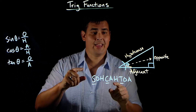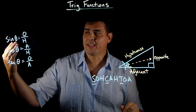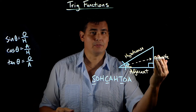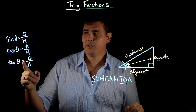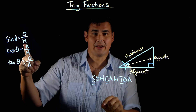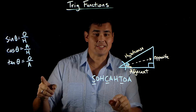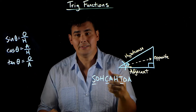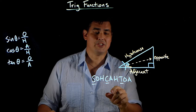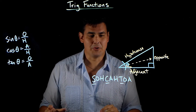Sine theta, cosine theta, tangent theta — these are just ratios; the ratio of the length of one side of the triangle to the other. So sine of theta equals the opposite side divided by the hypotenuse. Cosine theta equals the adjacent side divided by the hypotenuse. And tangent theta equals the opposite side divided by the adjacent side — that's the TOA part of SOHCAHTOA.